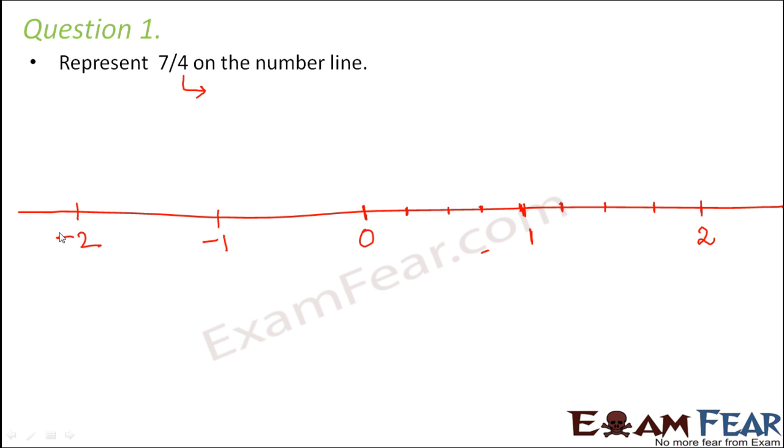Now why we are not doing it on the other side is this is a positive rational number, so it will obviously exist somewhere on this side. So now what would be this first point? It is 1 part out of 4 parts, so this will be 1/4. This is 2/4, this is 3/4, this 1 is nothing but 4/4, this is 5/4, this is 6/4, this is 7/4, and this 2 is again nothing but 8/4. So where is 7/4? Here. So this is how we locate or represent 7/4 on the number line.